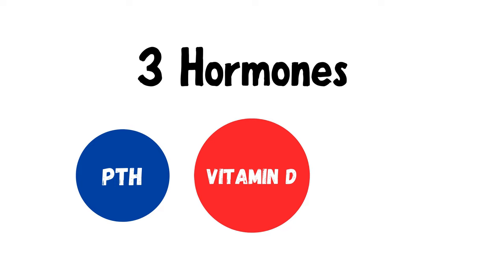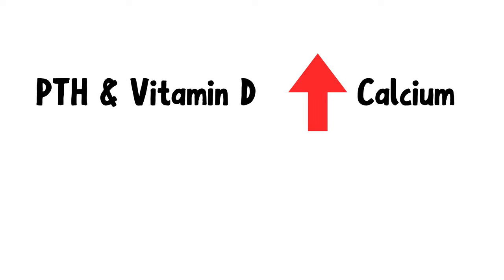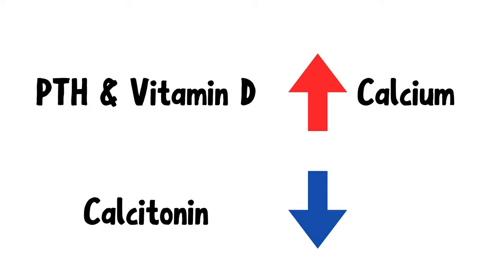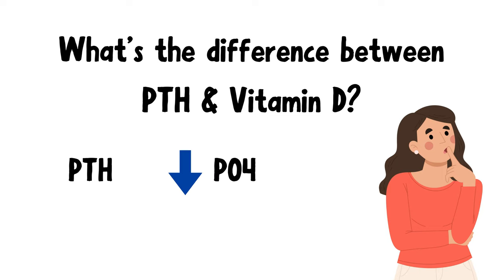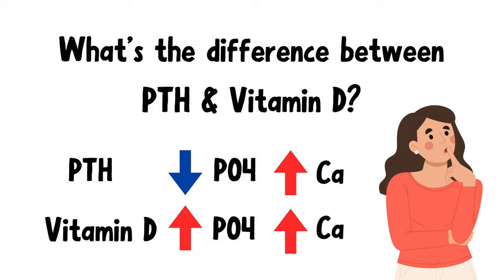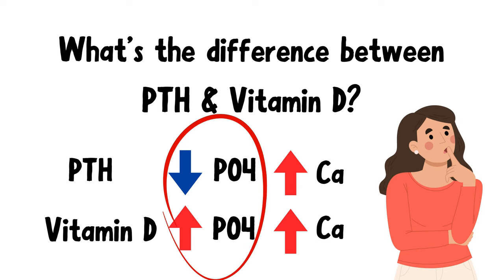In our body, there are three hormones that regulate the blood calcium level: PTH, Vitamin D, and Calcitonin. PTH and Vitamin D increase the blood calcium level, while Calcitonin decreases it. The difference between PTH and Vitamin D is that PTH decreases phosphate and increases calcium in the blood, while Vitamin D increases both calcium and phosphate levels. Let's have a look at Vitamin D first.